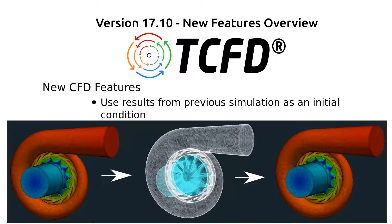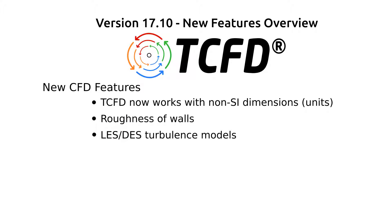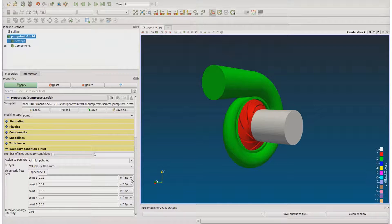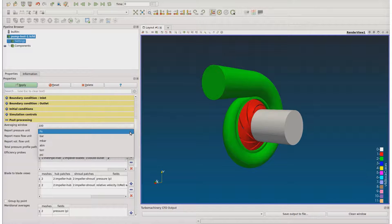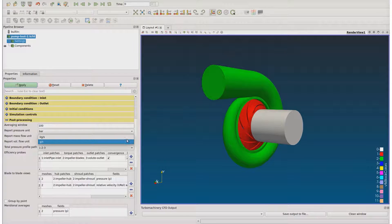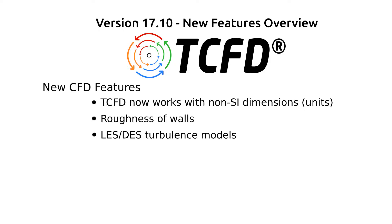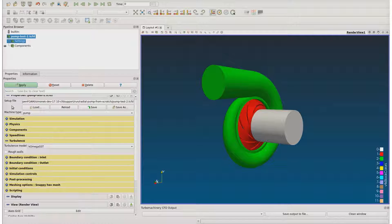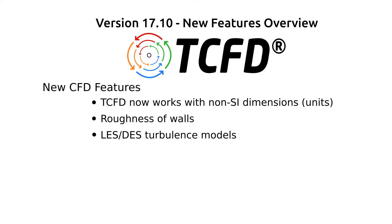A great innovation is also the possibility to use results from the previous simulation as an initial condition. TCFD now works also with known SI dimensions. In the case setup, and also in results and plots in the final report, you can now choose the units you like to work with. New is also the possibility to take roughness of walls into account. And the last novelty is the possibility to enable LES or DES turbulence models for transient simulations.